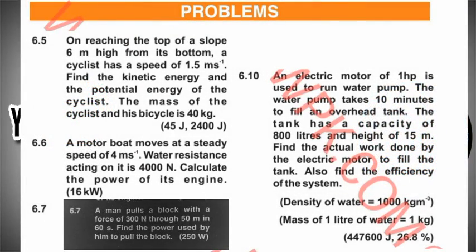Now come to numerical number 6.7. A man pulls a block with a force of 300 newtons through 50 meters in 60 seconds. Find the power used by him to pull the block. So we need to find the power.